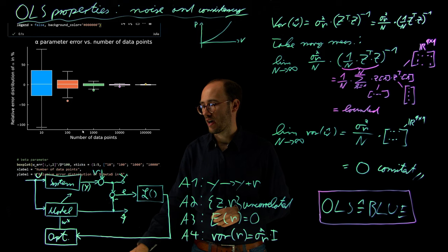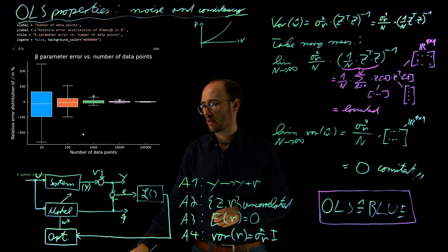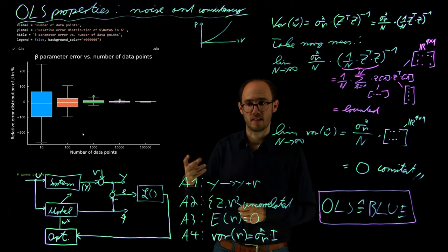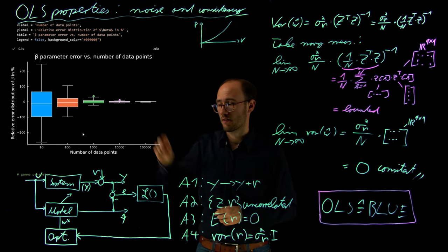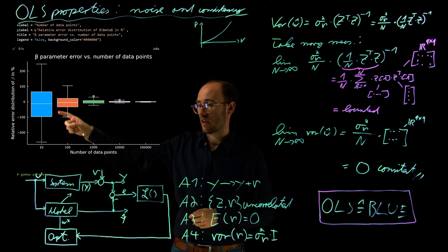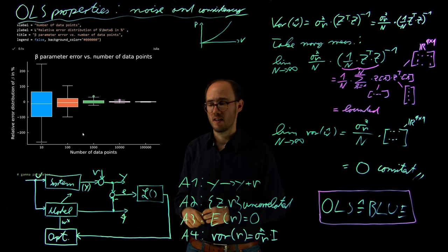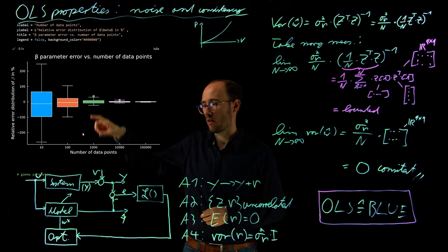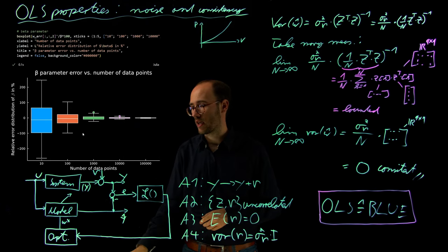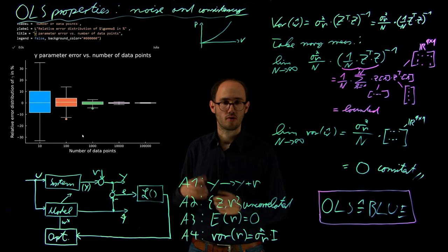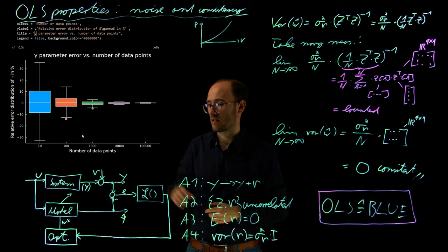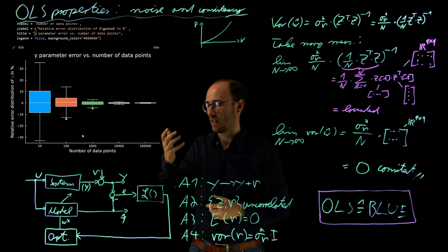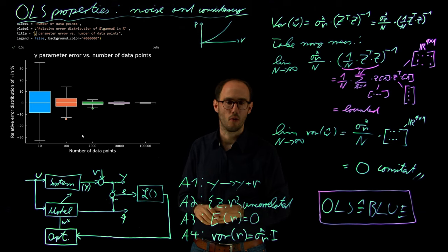We can also look at the other parameters. For the beta parameter, which represents the quadratic term of velocity in the power curve, the quantitative dependency is the same, but it appears that beta is more sensitive because the relative error on the y-axis is greater than for alpha. For the gamma parameter, which represents the cubic impact of speed versus power, this seems to have the least sensitive impact because the error range is the lowest among all three parameters.